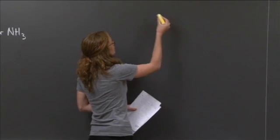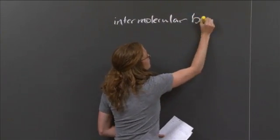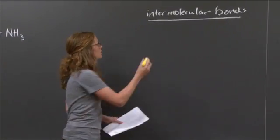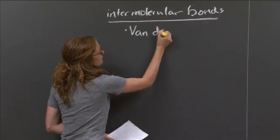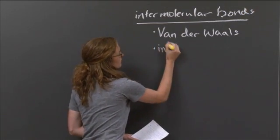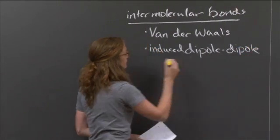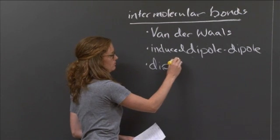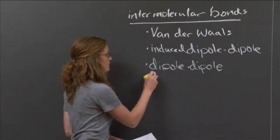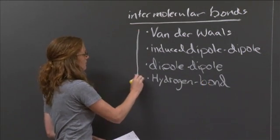Professor Sadoway in class went over a couple of different types of intermolecular bonds. I'm going to write them down in order of increasing strength. The weakest intermolecular bonds we have are van der Waals. The next is induced dipole-dipole. Next, we have dipole-dipole. And finally, a special type of dipole-dipole is the hydrogen bond, which is the strongest.